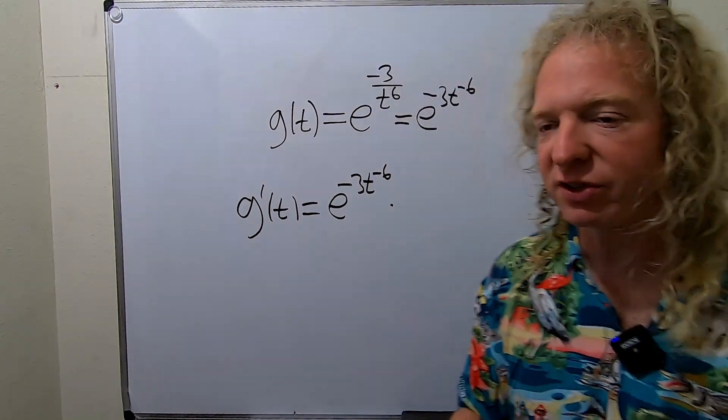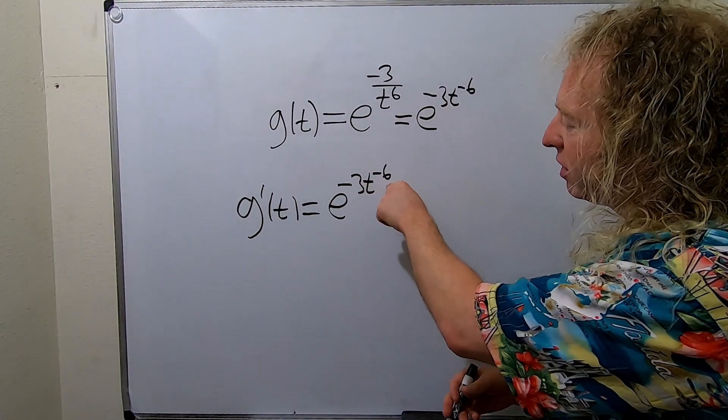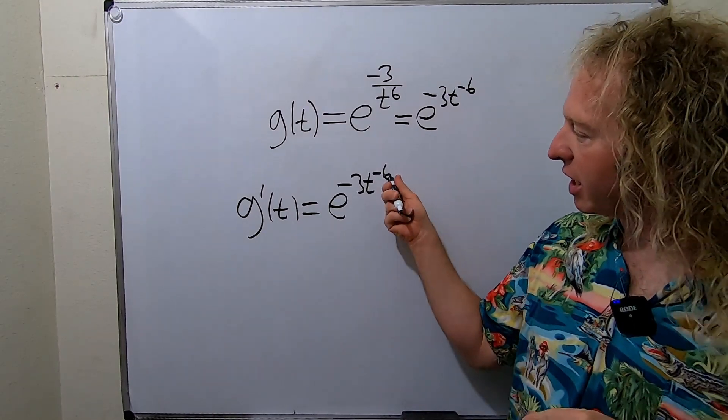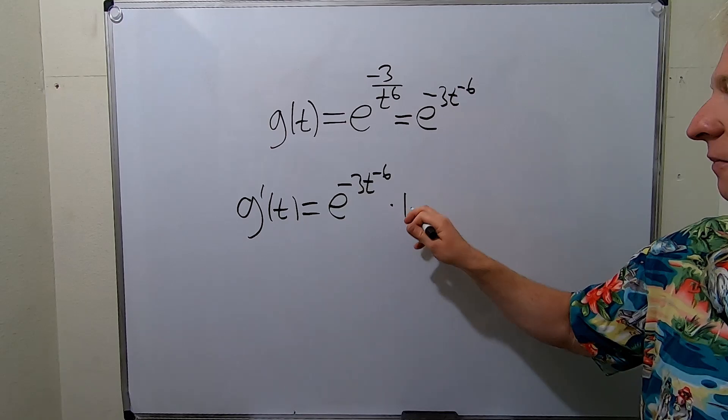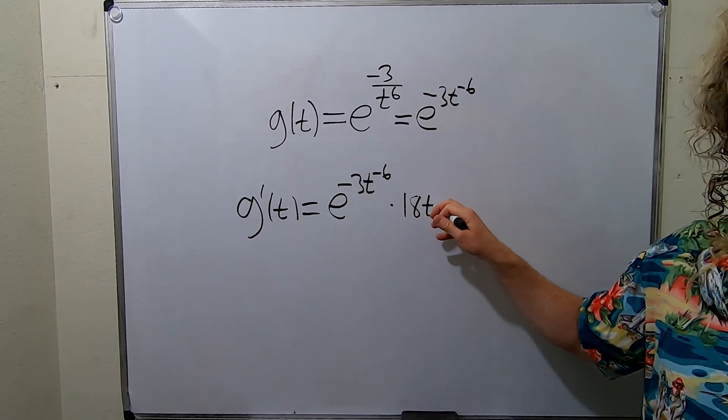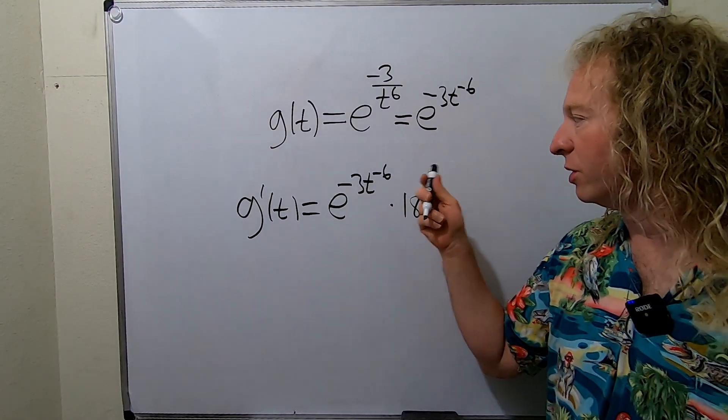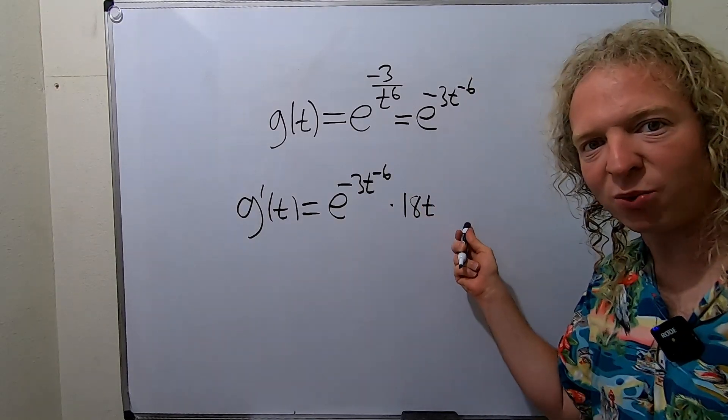This derivative is a power rule, so it'll be negative 6 times negative 3, so 18, positive 18t. Then you subtract 1, so negative 6 minus 1 is negative 7.